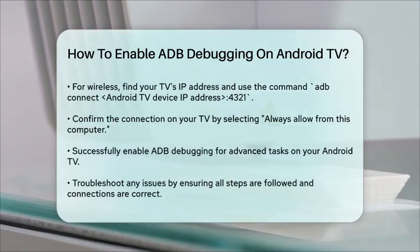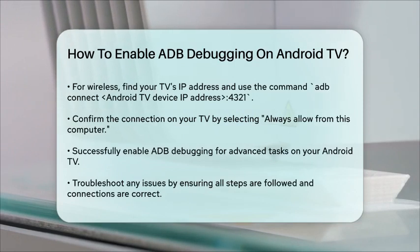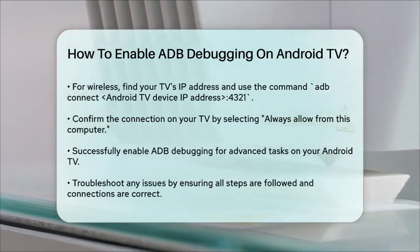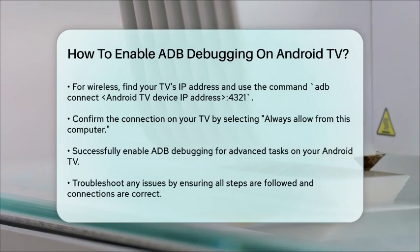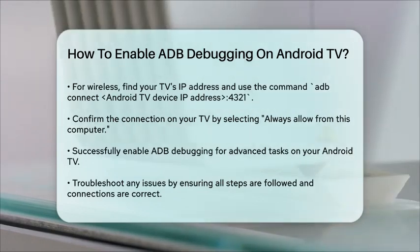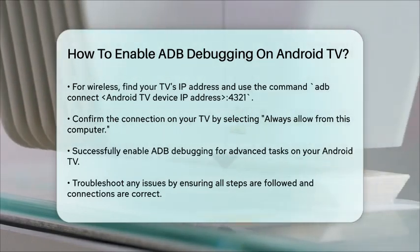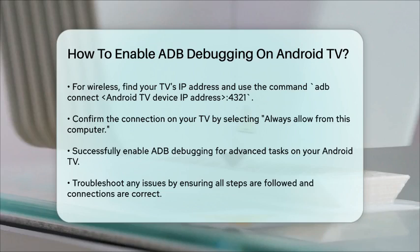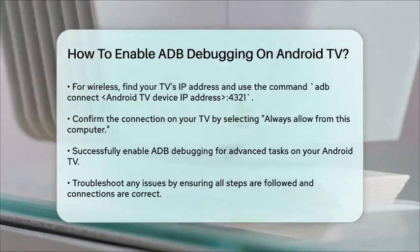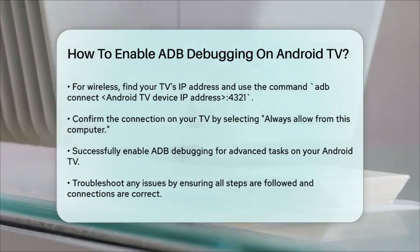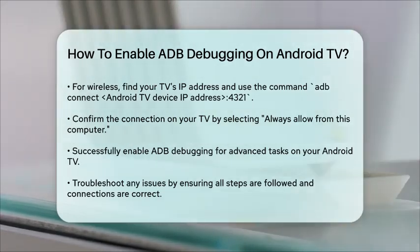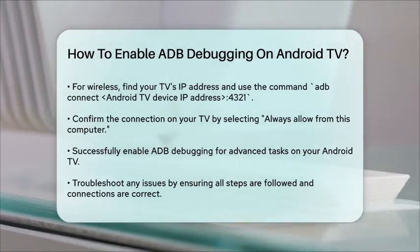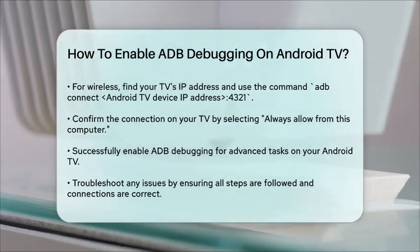On the TV, you'll get a prompt to allow the connection. Select Always Allow from this computer and click OK. That's it — you've successfully enabled ADB Debugging on your Android TV. This will allow you to use various ADB commands to debug apps, install APKs, and perform other advanced tasks on your TV.